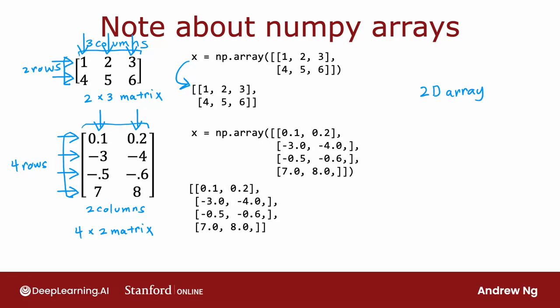Matrices can have different dimensions. You saw an example of a 2 by 3 matrix and a 4 by 2 matrix. A matrix can also be other dimensions like 1 by 2 or 2 by 1. And we'll see examples of these on the next slide.